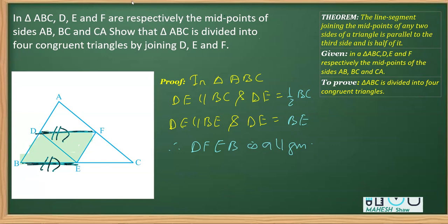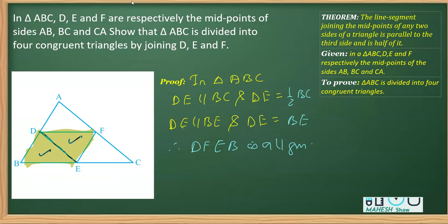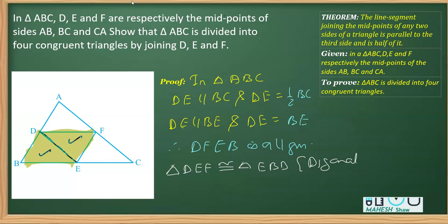In this parallelogram, DE is the diagonal. The diagonal of a parallelogram divides it into two congruent triangles. So we can write: triangle DEF is congruent to triangle DBF. The reason is that the diagonal of a parallelogram divides it into two congruent triangles. Let's mark this as equation one.